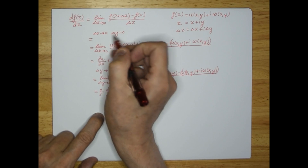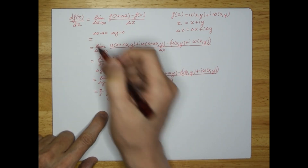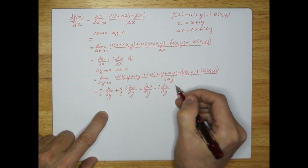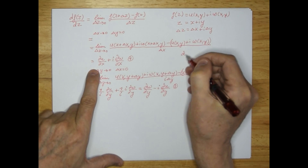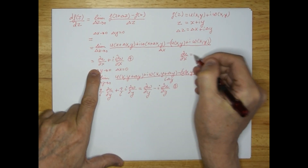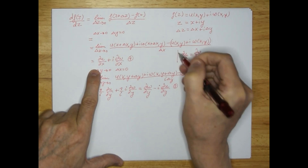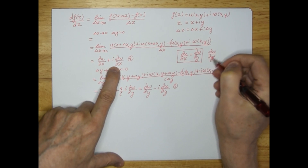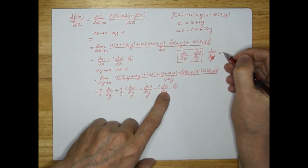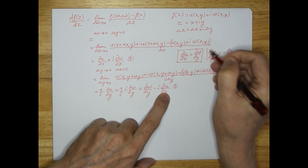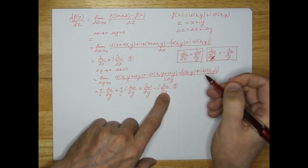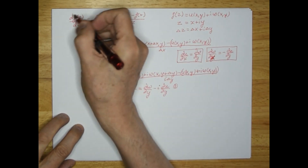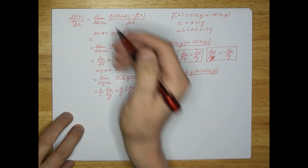Now, differentiating with delta y going to zero and delta x equal to zero, or delta x going to zero and delta y equal to zero — in order for this differentiation to be consistent, these two results better be the same. So it must hold that du/dx equals dw/dy — that's the first condition. And the second condition that needs to hold is dw/dx equals minus du/dy. If they're not the same, you differentiate in an inconsistent way.